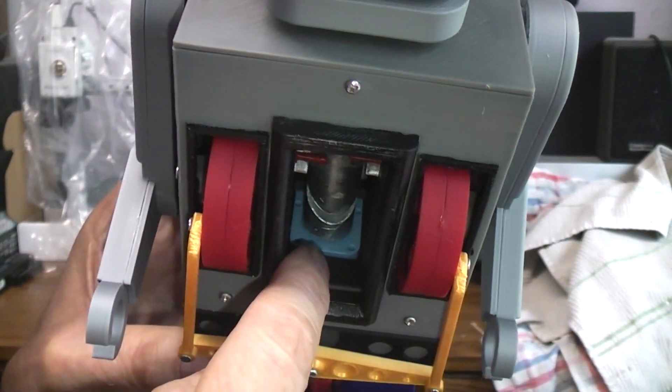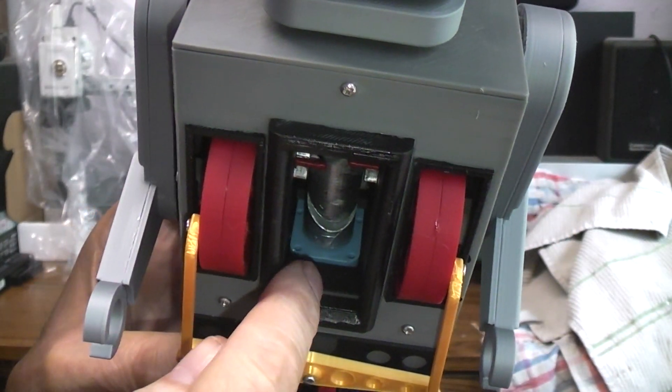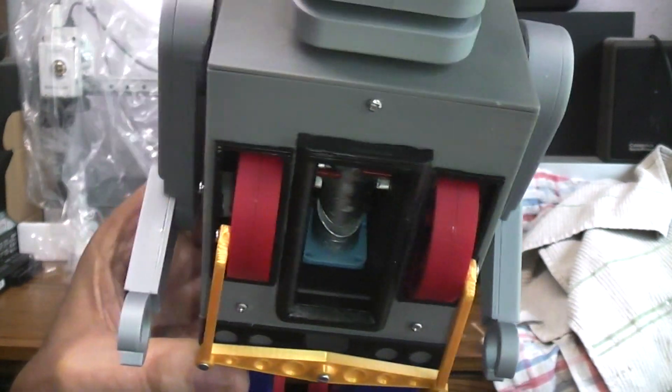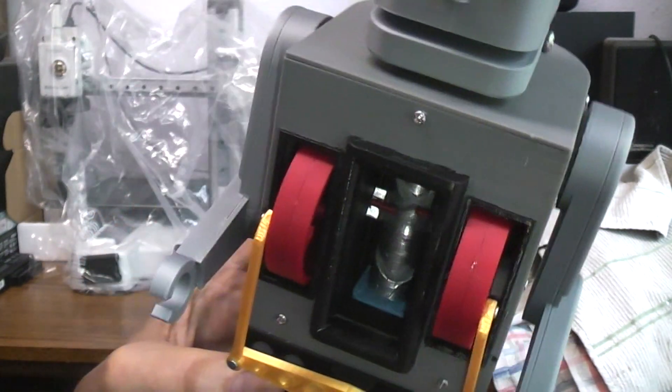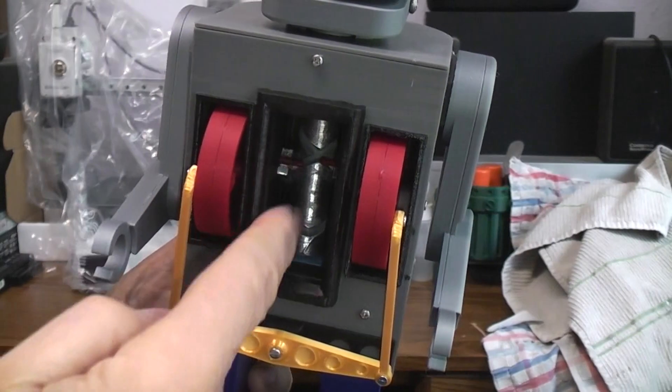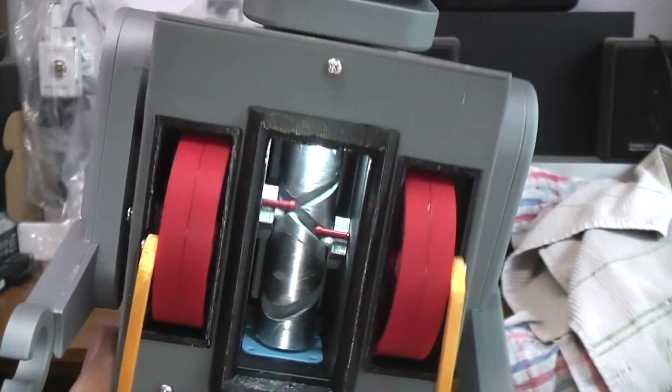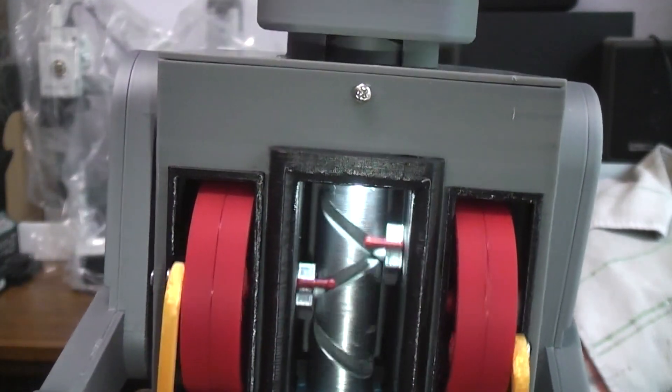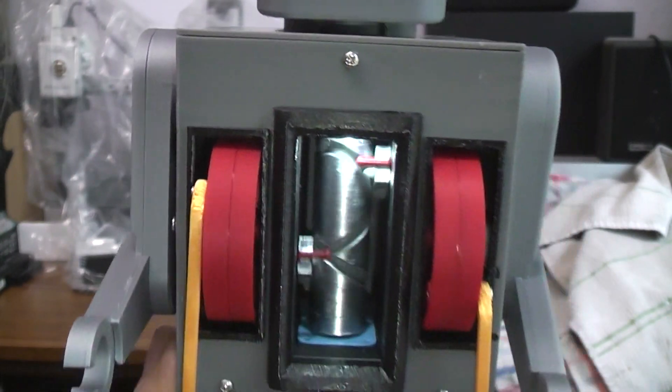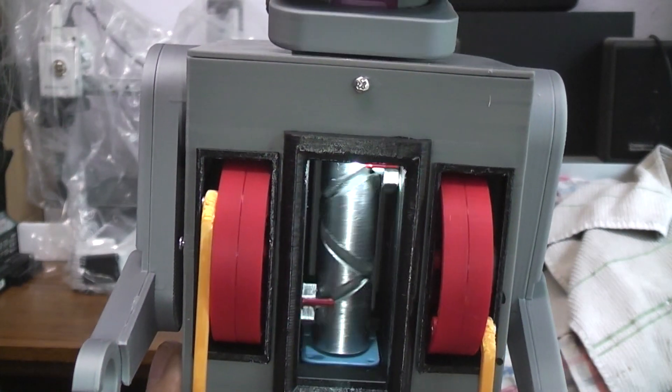You can see the blue TT motor down there, which is the 90 to 1 gear ratio motor. It drives the shaft, and the shaft drives the traveler as you can see. I added some little red pieces so it's easier to see it going up and down.